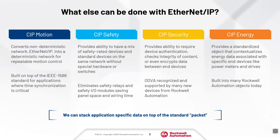Starting on the far left, we have SIP-Motion. SIP-Motion allows us to convert a non-deterministic network like Ethernet IP into a deterministic network for repeatable motion control. In a motion network, assets need to move to a fixed place at a fixed time, but there is a lot of different communication happening on the wire in addition to sending motion commands. SIP-Motion allows us to provide that level of control on a standard Ethernet network.